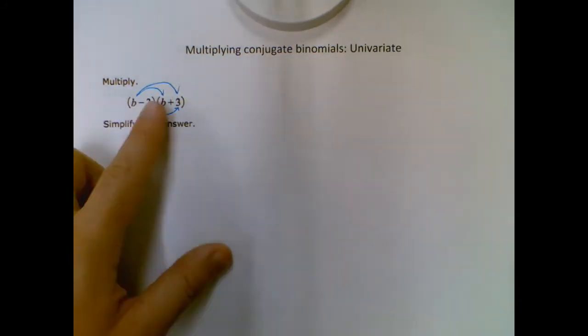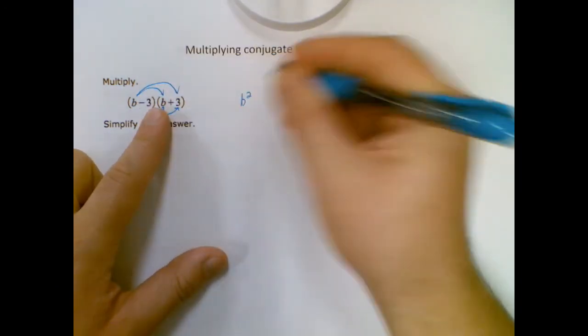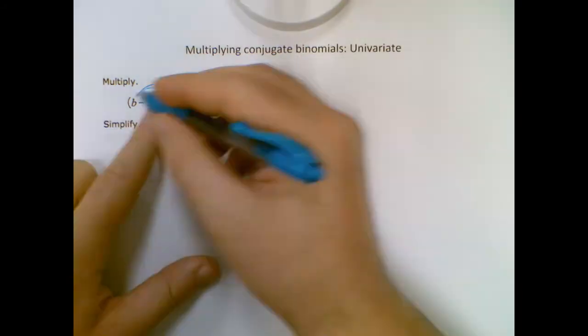Okay, so let's do the first term first. So B times B is B squared. B times 3 is 3B. And that's it for my first term.